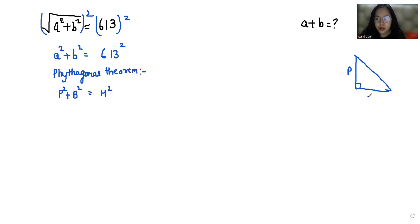This is p, this is b and this is h. If I write in terms of abc, this is a, this is b and this is c.